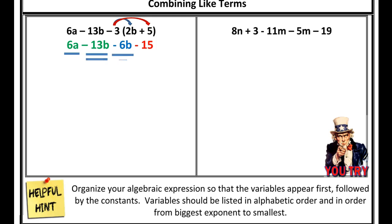I see negative 13b and negative 6b — two sets of like terms. Negative 13b is negative 13 sets of b, and negative 6b is negative 6 sets of b — they can be combined. Negative 15 is all by itself, a separate category. I have underlined 6a once, my two sets of b's twice, and my constant three times — three categories. My final answer should have three different terms unless something cancels out.